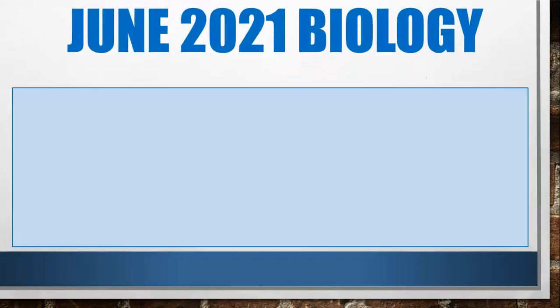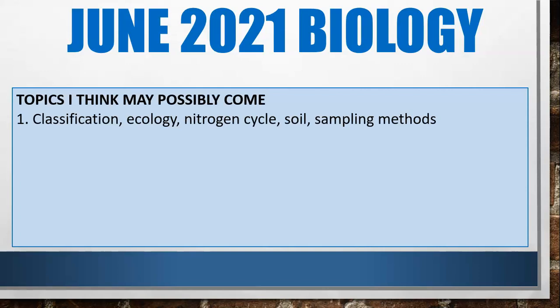Now let's look at the biology predictions. The first question I'm thinking may possibly be on classification or ecology — something related to sampling methods, maybe some kind of graph or experiment on soil. And then possibly they may squeeze in a nitrogen cycle, which I haven't seen come in a while — I've seen the carbon cycle come for a couple of years recently, but no questions really on the nitrogen cycle.